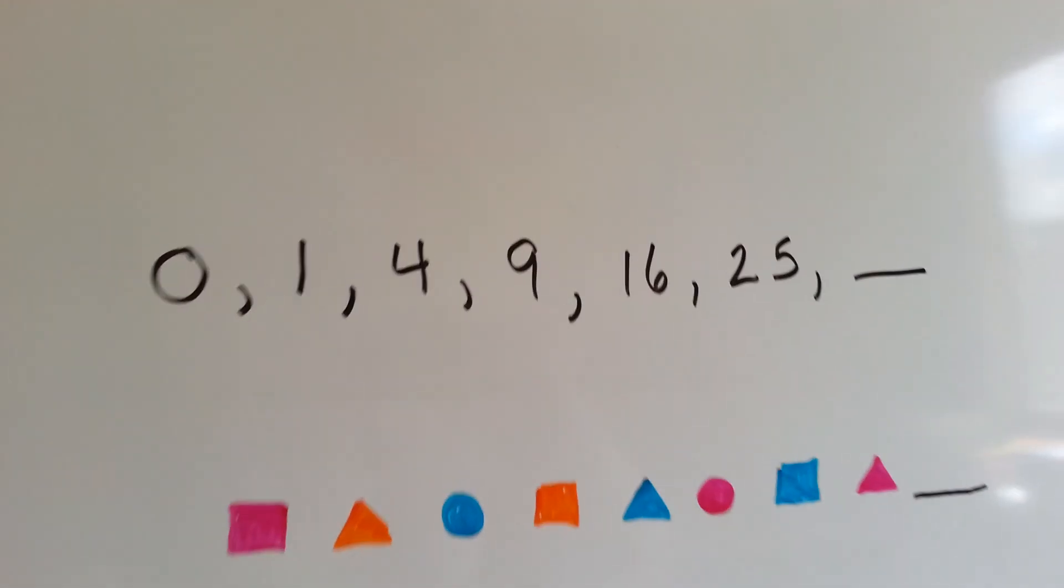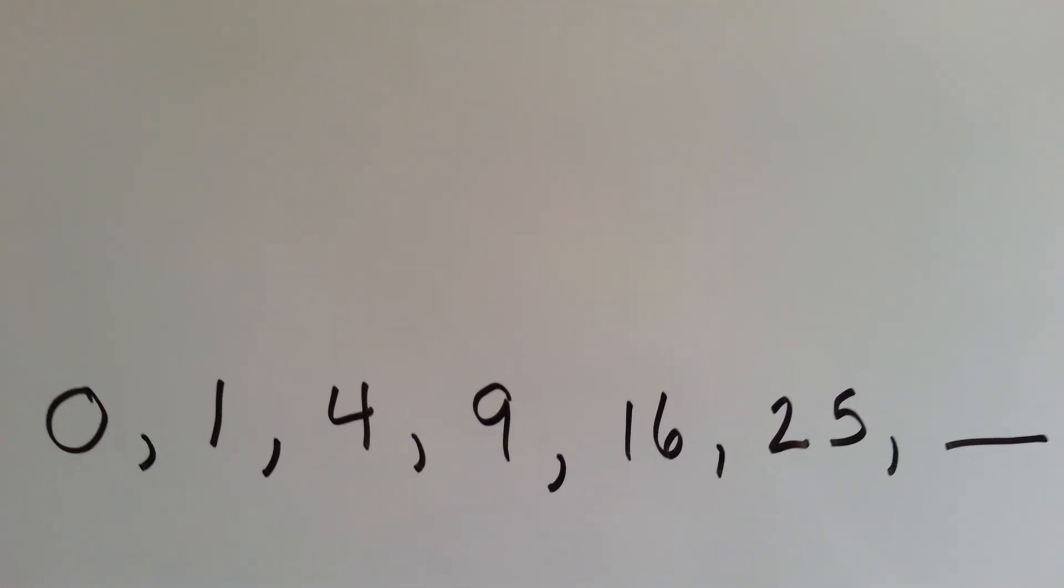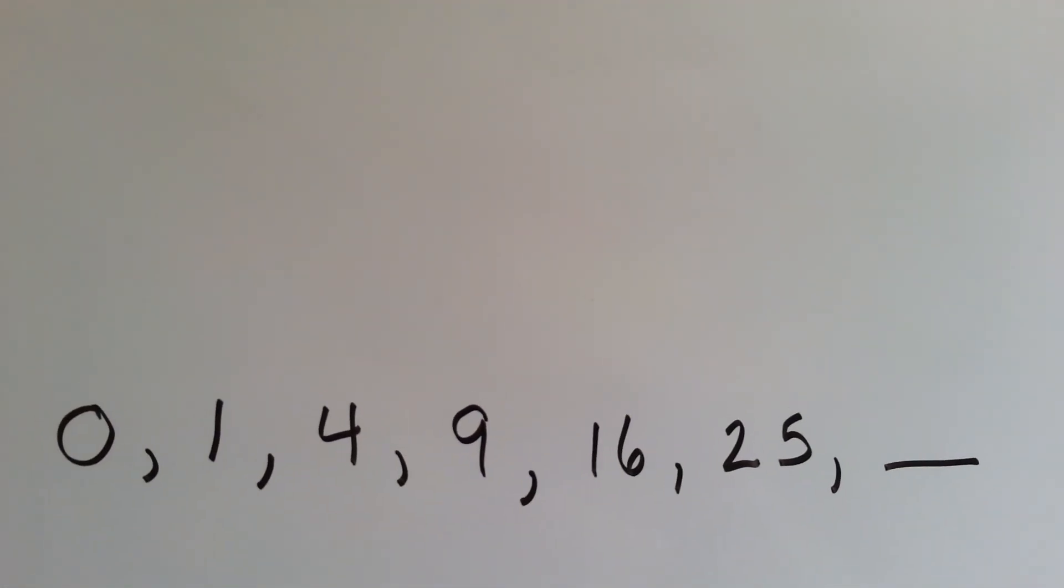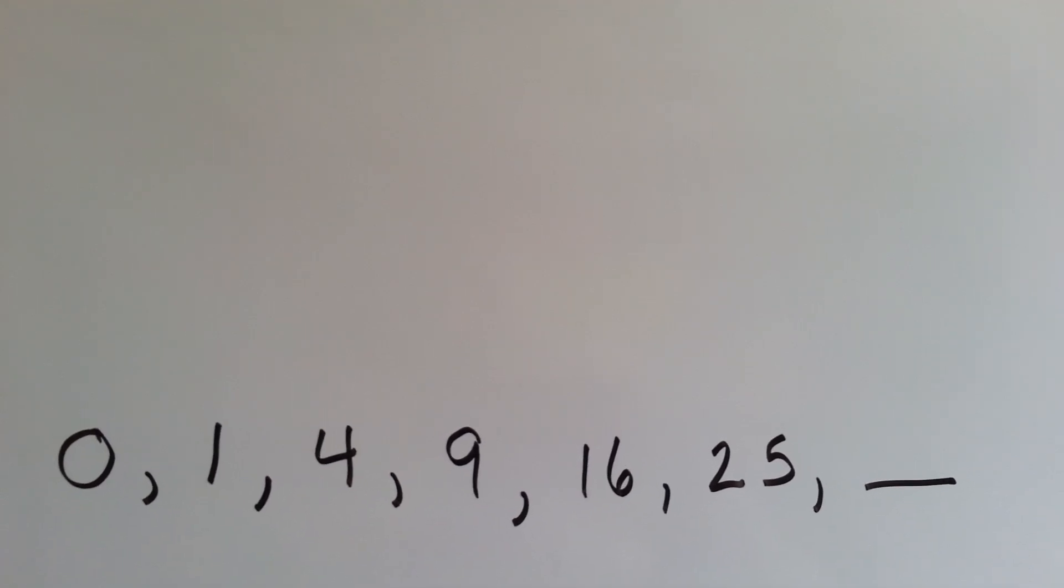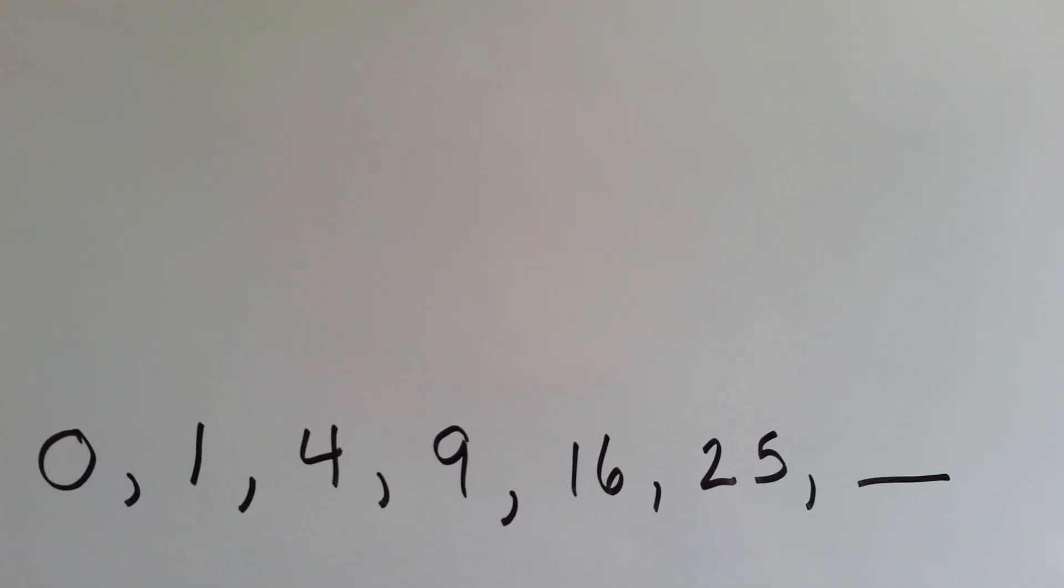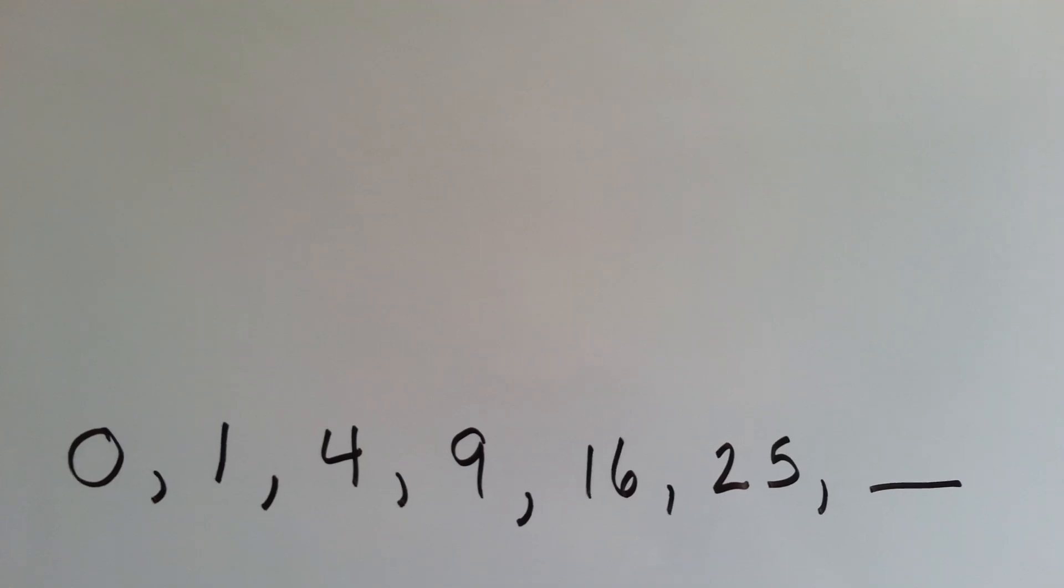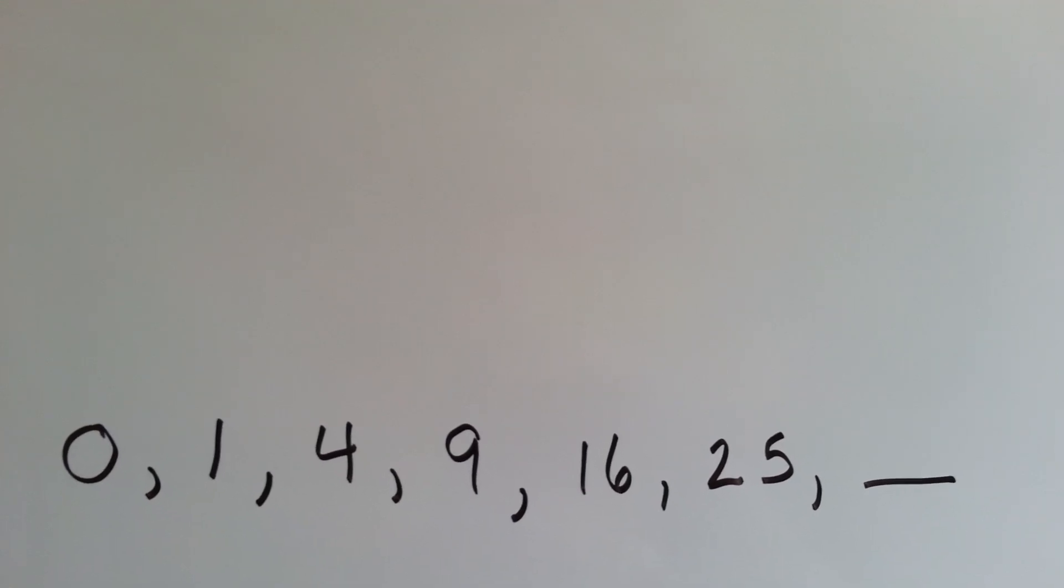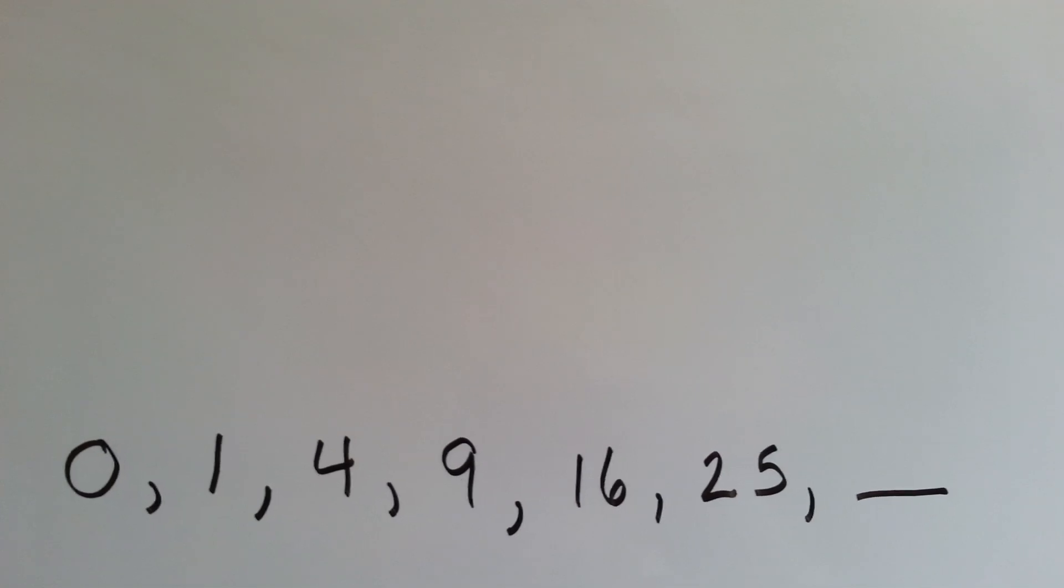Okay, they're getting a little harder. Can you figure out the next term for this pattern? What's happening here? 0, 1, 4, 9, 16, 25. Hmm. If you want to pause the video so you can figure it out on your own, you should do it now, because I'm going to show you the answer.